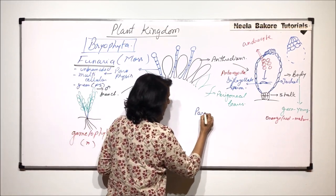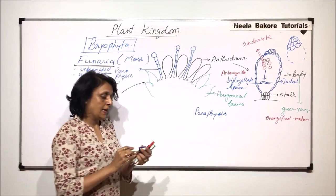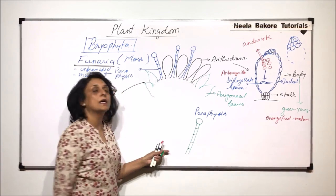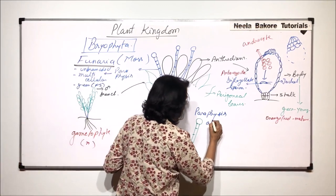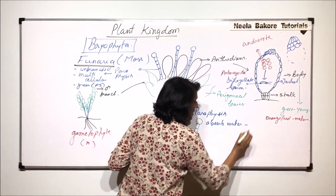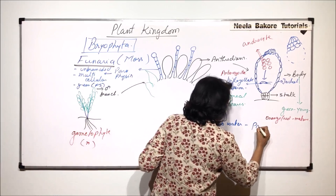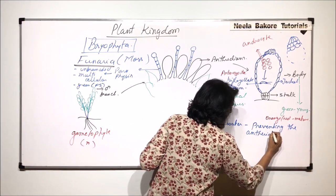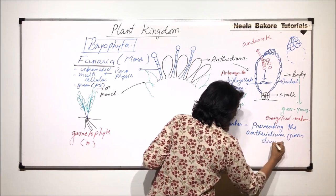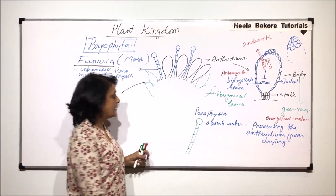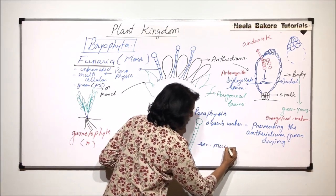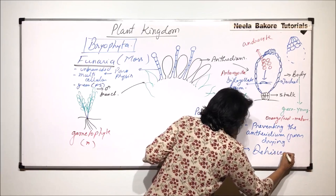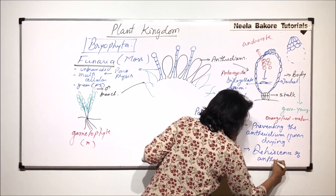If we talk about these paraphyses again, they are multicellular and the topmost cell is swollen. They are unbranched. They absorb water and because of this they prevent the antheridium from drying. This is one function performed by paraphyses. The second function is they secrete mucilage and this mucilage helps in dehiscence of antheridium.